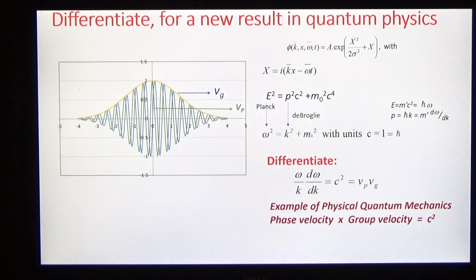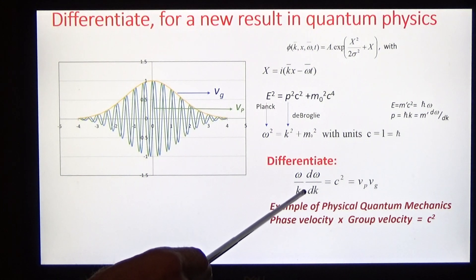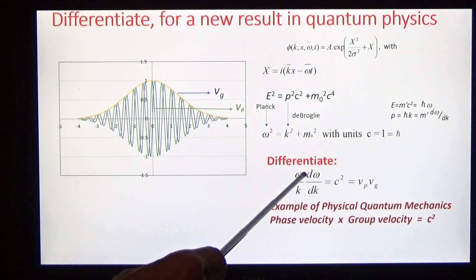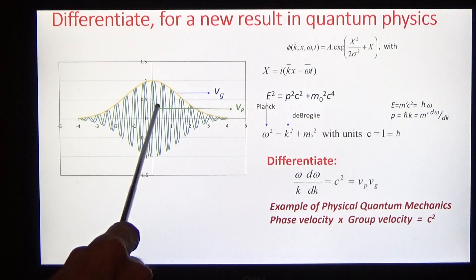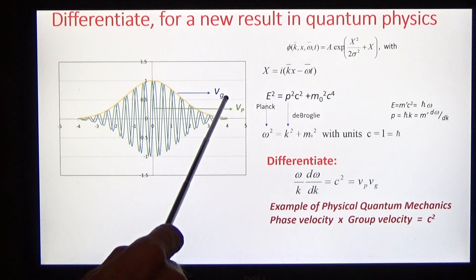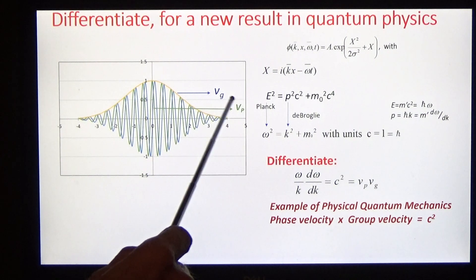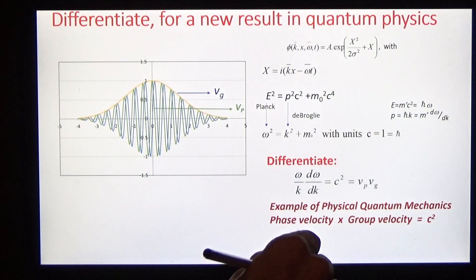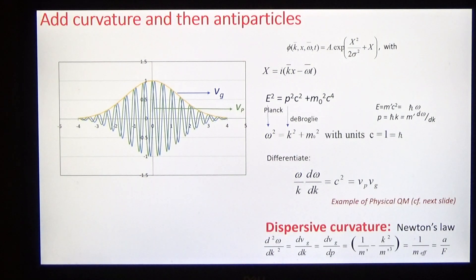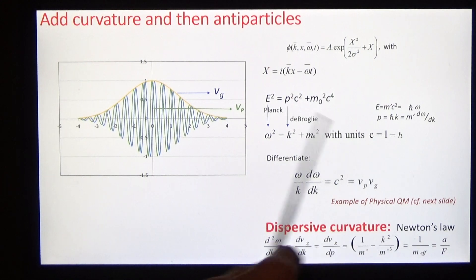As illustrations, we can do some important things with this formula. We can differentiate it and find that the product of the phase velocity and the group velocity is equal to c squared. Here's the phase velocity and here's the group velocity — they are different when m is greater than zero. And if we differentiate again, we find Newton's second law of motion.